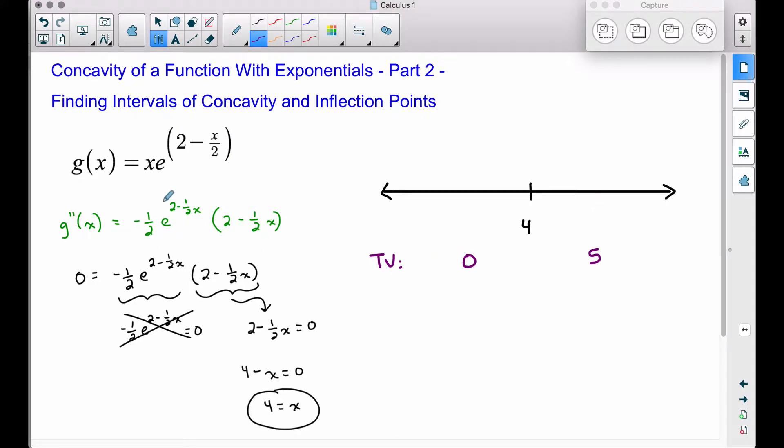Let's plug zero into this second derivative. Now you may think you need a calculator for this, but you don't. When you plug zero into x, you're really going to get e squared, because that's e to the two minus zero. So that's e squared, which is a positive number, times a negative one half. All of this will give us a negative number. So we have a negative number times, what type of number do we get when we plug zero into this? Two minus zero gives us a positive. Therefore, a negative times a positive gives us a negative. This implies that our function is concave down to the left of four.